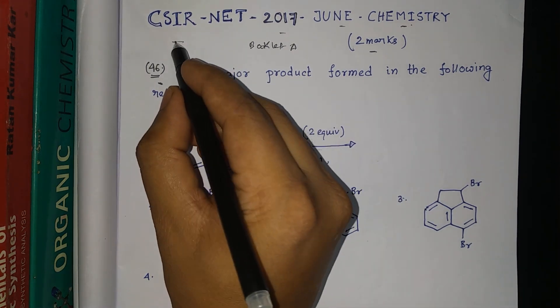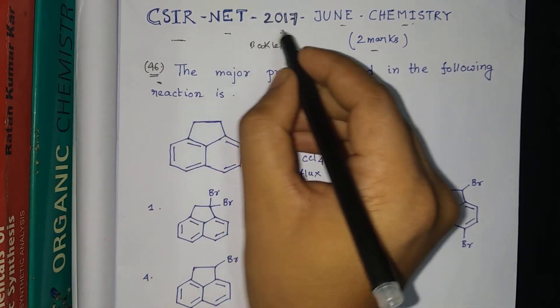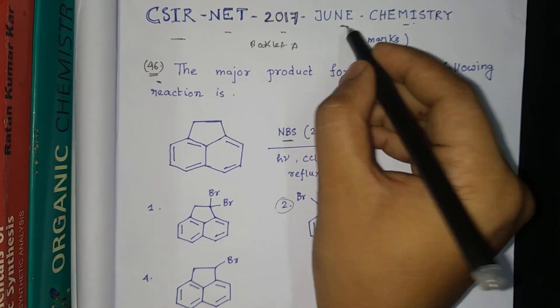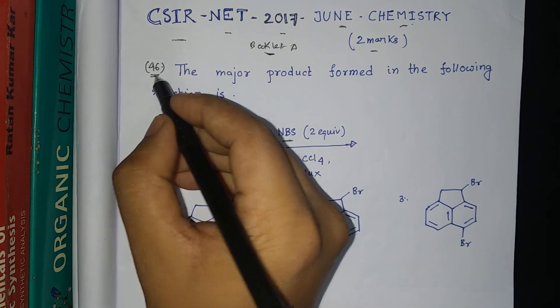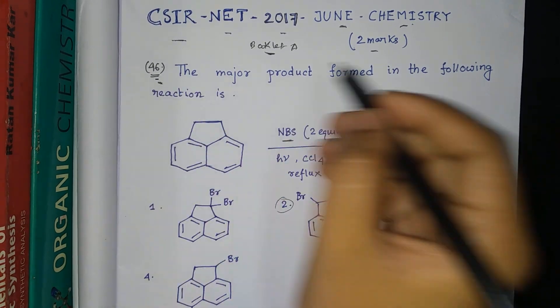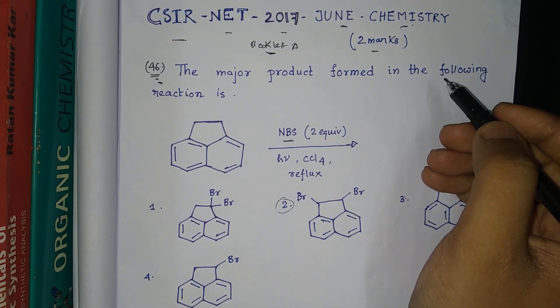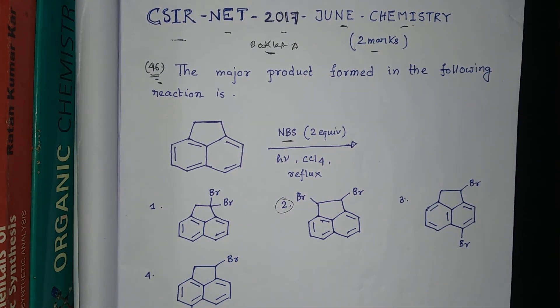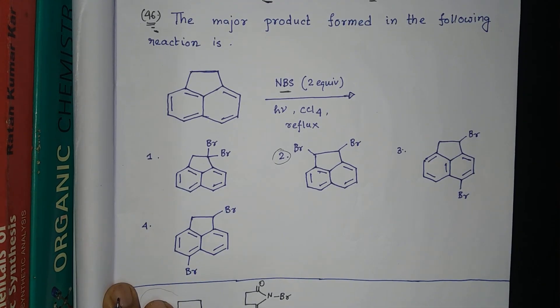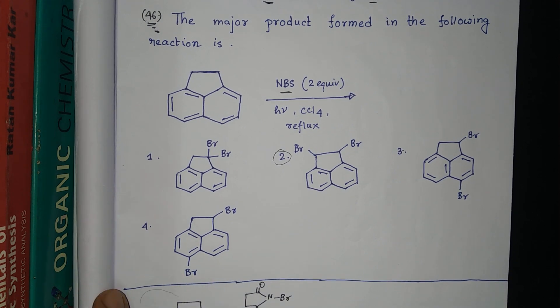Hello guys, today we will discuss CSIR-NET 2017 June Chemistry question booklet A, question number 46. It is a two-mark question. This is the question on your screen — please note it down.